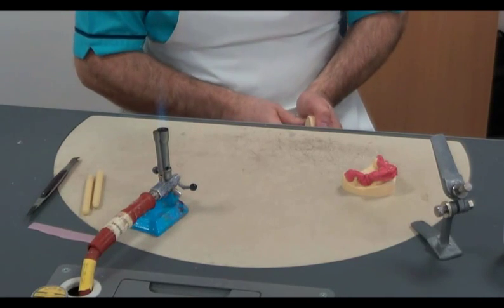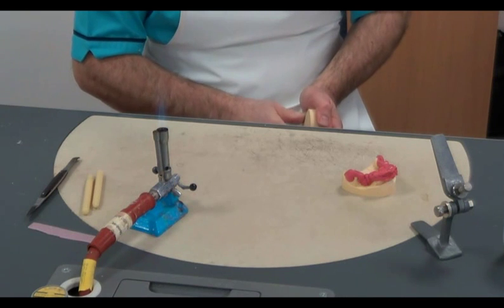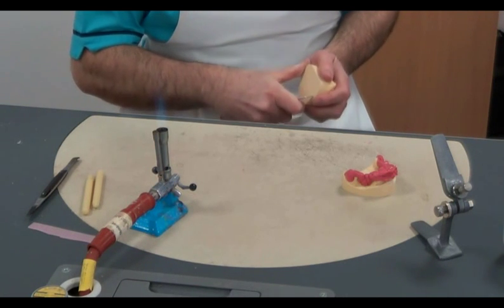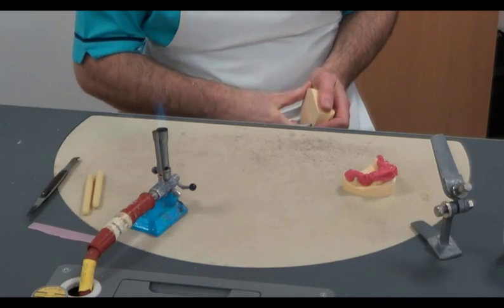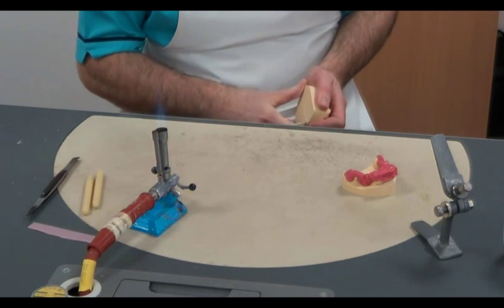To prepare the models for attachment to the hinge articulator, we should first score the base of the models to provide a relocation groove in case the models become separated from the plaster at a later time.